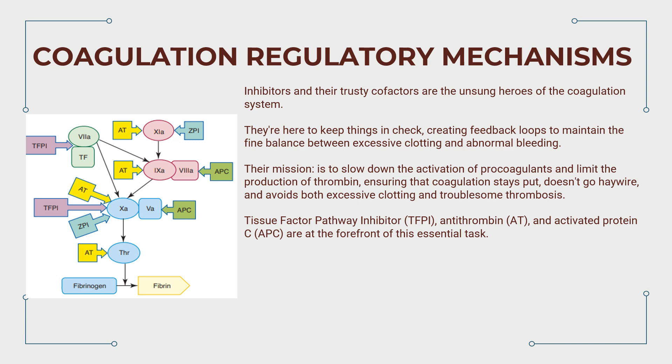Tissue factor pathway inhibitor, TFPI, antithrombin, AT, and activated protein C, APC, are at the forefront of this essential task. Any deficiencies in these proteins, whether acquired or inherited, might throw the hemostatic balance off kilter, leading to an increased risk of venous thromboembolic disease.